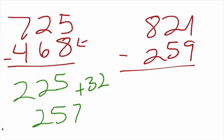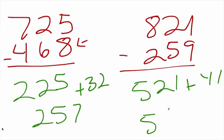Let's look at 821 minus 259. Again, we want to ask ourselves how far is 259 from the next multiple of 100, which is 300. How far is it? 41. So we have 821 minus 300, which gives us 521, and that's going to be plus 41, so we get 562.